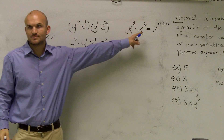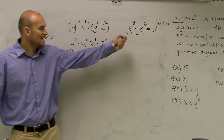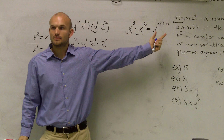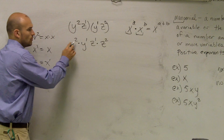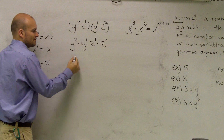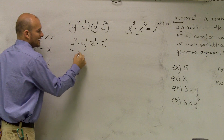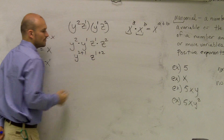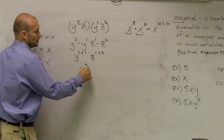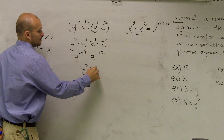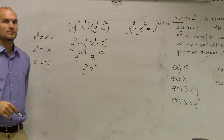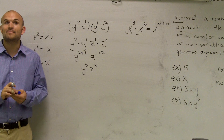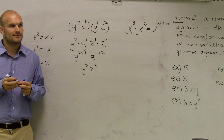By using my rule of exponents, when I have the same base and an exponent, all I do is add the exponents. So y squared times y to the first is y to the 2 plus 1, and z to the 1 plus 2. So I get y cubed z cubed. Remember, we cannot combine these because they're not the same base.